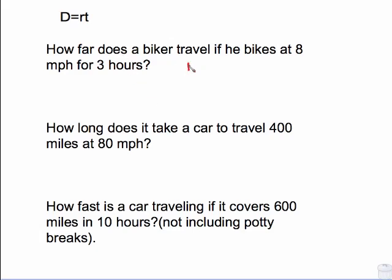This says, how far does a biker travel if he bikes at 8 miles per hour for 3 hours? Well, let's fill in these things. He bikes at 8 miles per hour. Look at the units. 8 miles per hour means that is a rate. That goes in for the R. T is 3 hours. Hours is a unit of time. So evidently what we're looking for is distance because that's the missing letter.